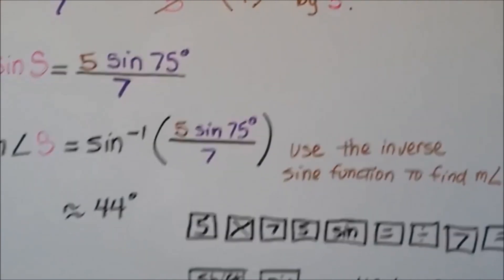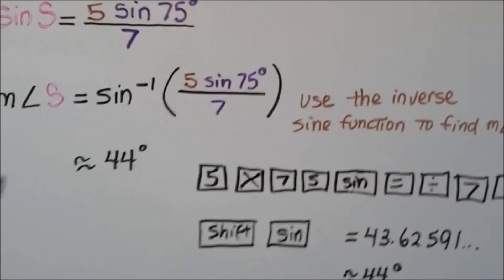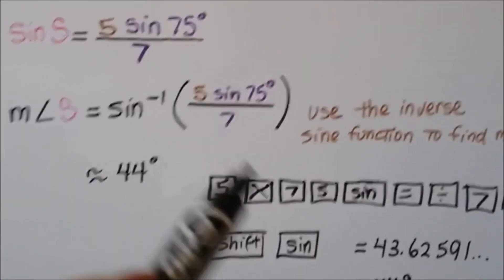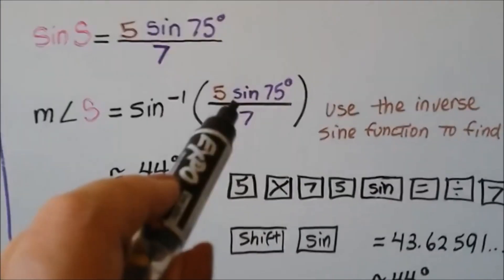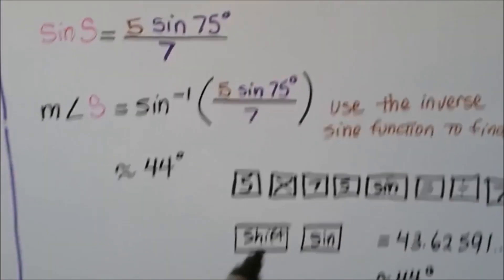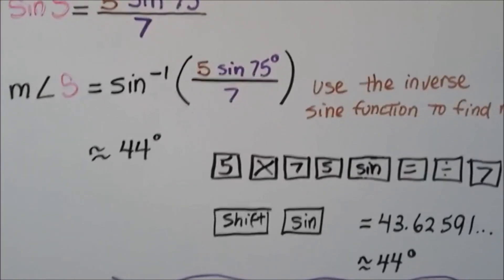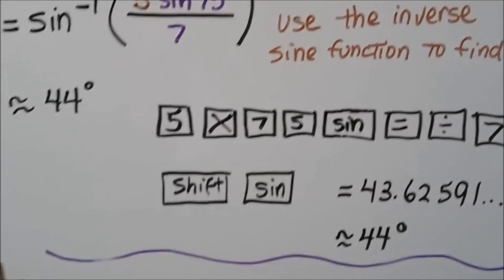We use the inverse sine function to find the measure of angle S. On our calculator, we would put in five times 75 sine equals. Then we would divide it by the seven, hit equals. Then for the inverse, we would hit shift sine. It would give us this decimal, and we can round that off to approximately 44 degrees.